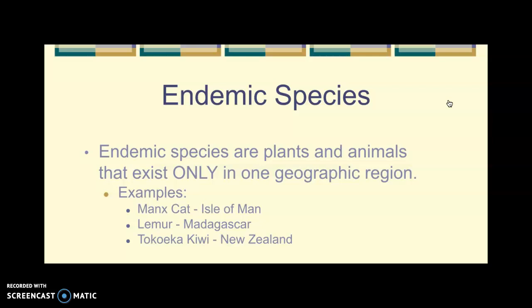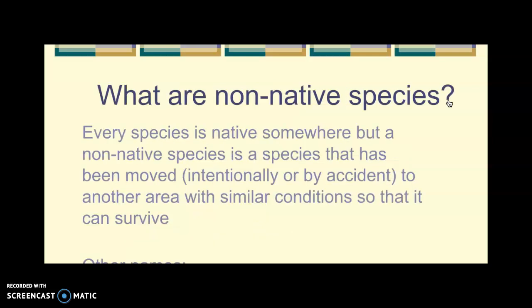Endemic species are likely to become endangered species, because if we wipe out where they belong, or an invasive species comes in and destroys their habitat, it can become a real problem. The big idea is that all species belong somewhere, and those are called native or indigenous species. That leads to the fact that there can also be non-native species.